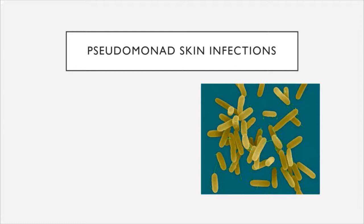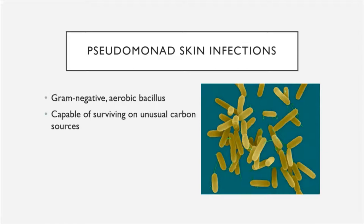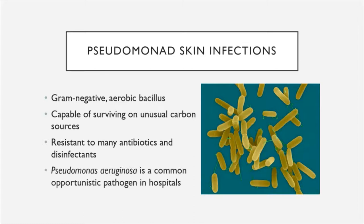Next we have Pseudomonad skin infections. Members of the genus Pseudomonas are gram-negative, aerobic, and bacilli-shaped. They are particularly difficult to disinfect because they are capable of surviving on unusual carbon sources and have a broad range of metabolic capabilities—they have been found growing on adhesives or even in some mild disinfectants. They are also resistant to many antibiotics, and the most pathogenic member, Pseudomonas aeruginosa, is a common opportunistic pathogen in hospitals.